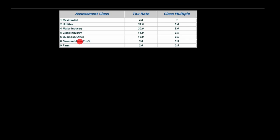Local governments often assign different tax rates to different classes of land or property types. Looking at a hypothetical example: the tax rate is expressed in dollars per $1,000 of property value. For instance, residential property has a tax rate of $4 per $1,000 of value — that's our base multiple.